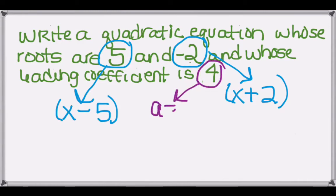A leading coefficient of 4 means our a value is equal to 4, and so if we put it all together we get 4 times (x minus 5) times (x plus 2), and it doesn't matter which order we write the factors in.